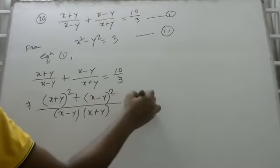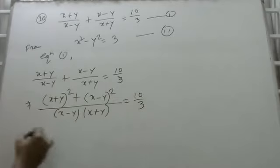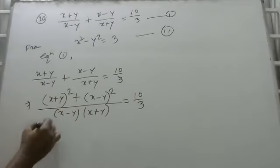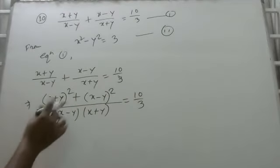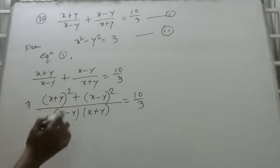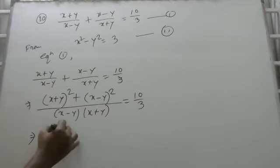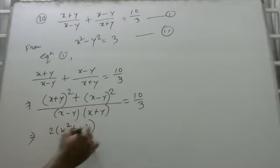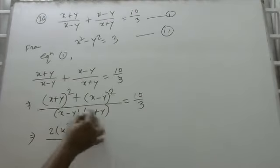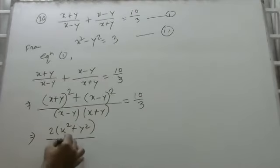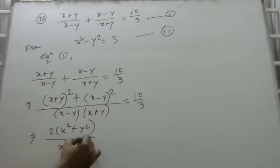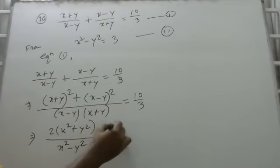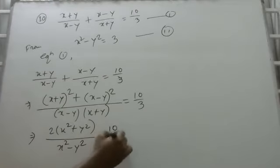This equals 10 by 3. In total, 2 into (x squared plus y squared) is equal to 10 by 3.